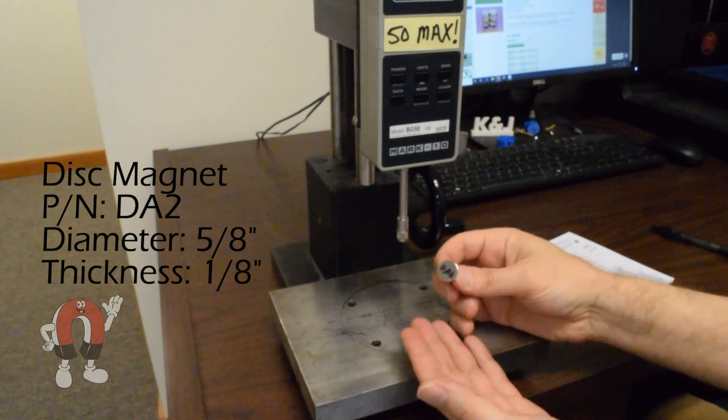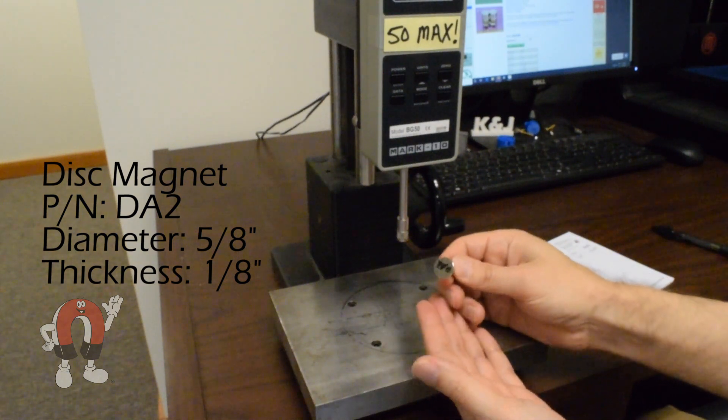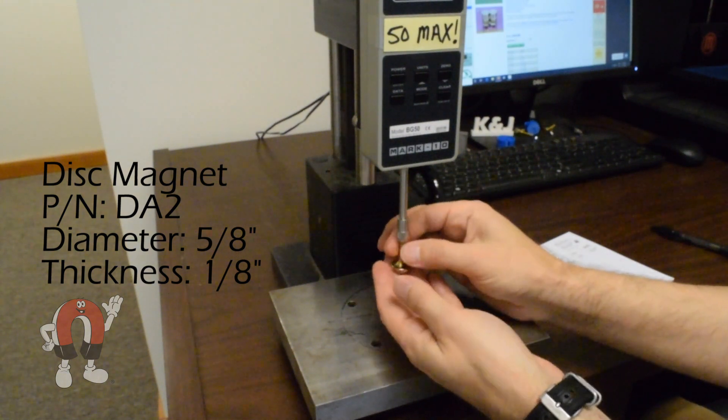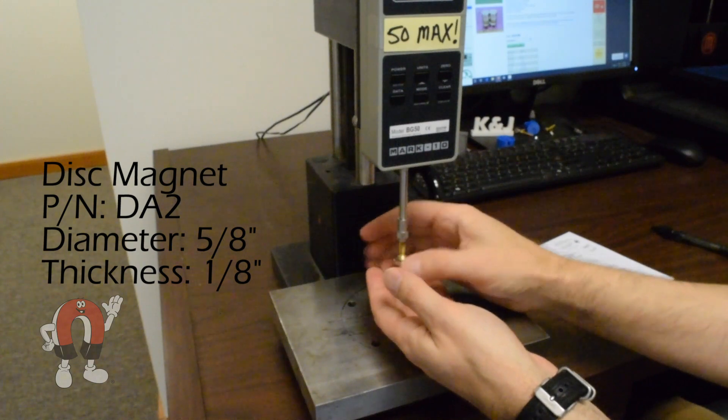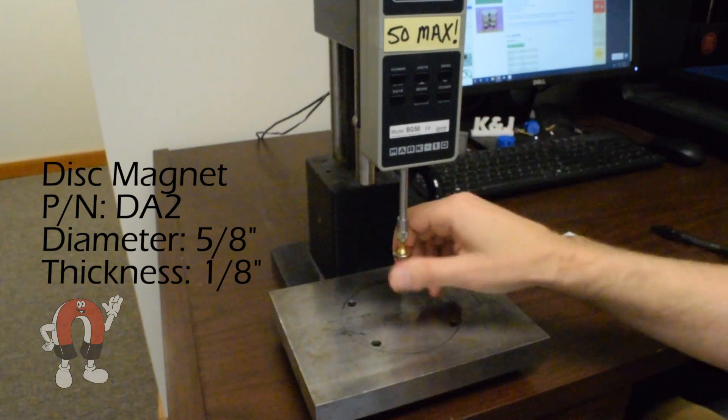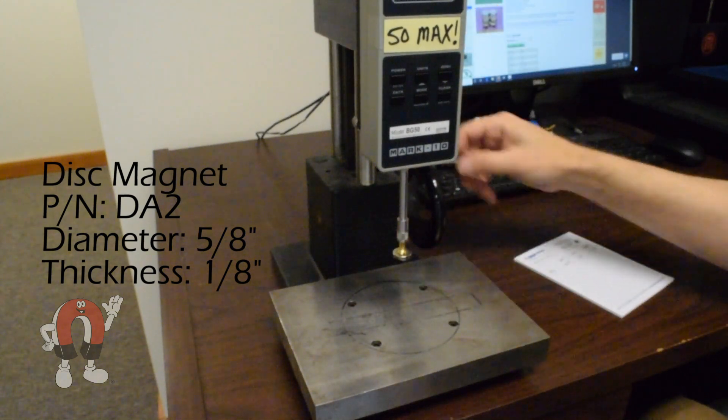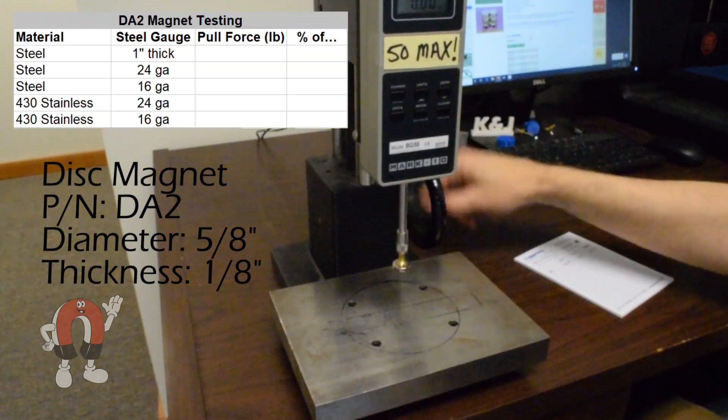How does using that ferritic stainless steel affect the pull force? The answer depends on what material you're using, but also on the size of the magnet, the thickness of the steel, and the geometry of the whole setup. Let's measure a few to see what we can find out.